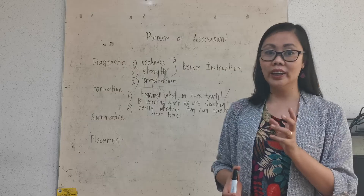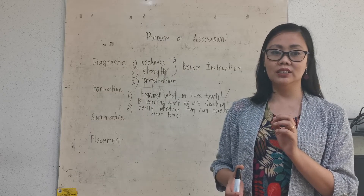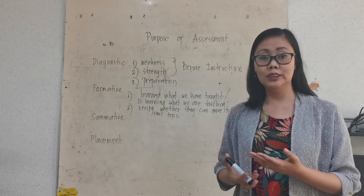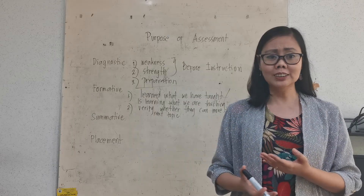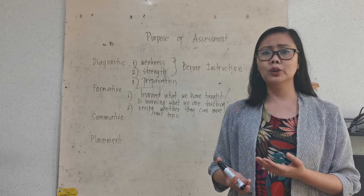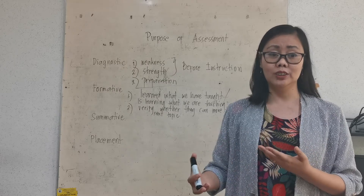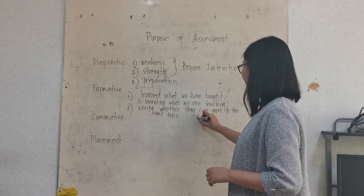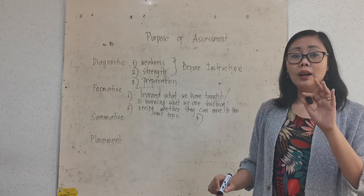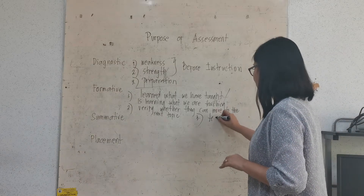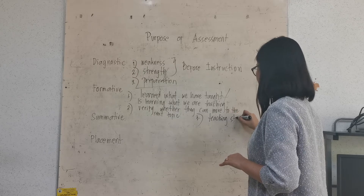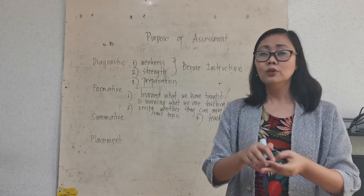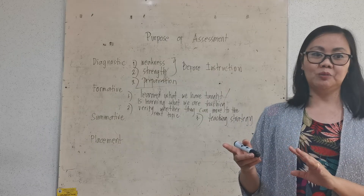If 70% of the students did not understand the lesson, the teacher needs to give supporting discussions — more drills, more examples, or repeat and reteach the whole lesson. At the same time, the formative assessment can also gauge whether the teaching strategy of the teacher is effective. If the students learned, it means the teaching strategy was effective.